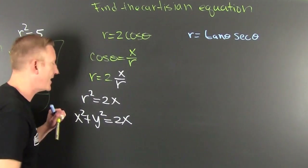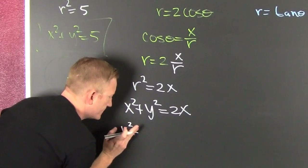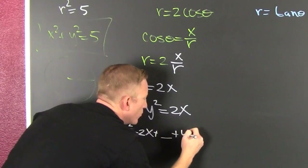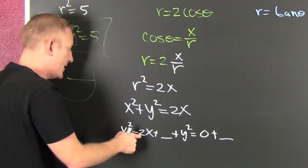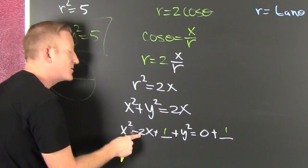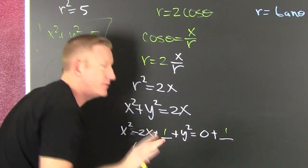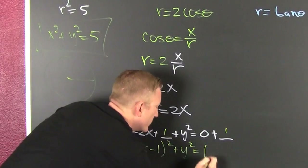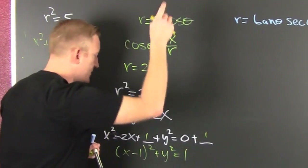Now I'm going to complete the square. I have x² − 2x + ___ + y² = 0 + ___. Half the middle coefficient squared — half of 2 is 1, and (−1)² = 1 — so I add 1 to both sides. That gives (x − 1)² + y² = 1. It's a circle with center (1, 0) and radius 1.